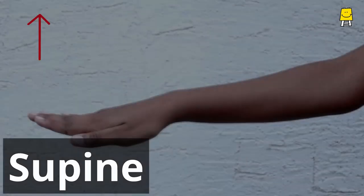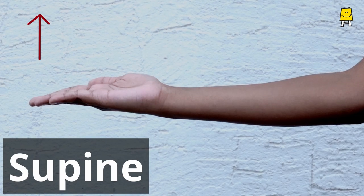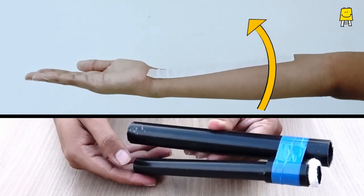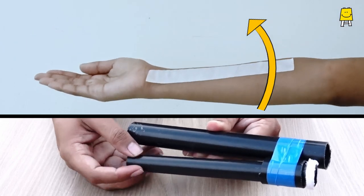Supine, that is when the palm is facing upwards. Here the bone goes back to the resting position.